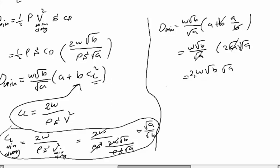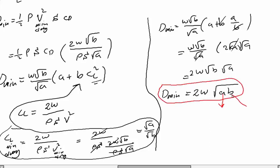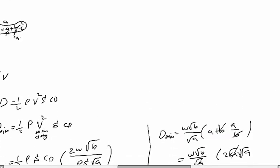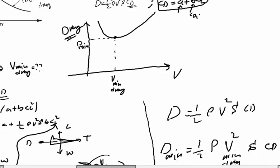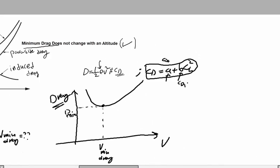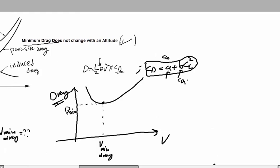The final result is: D_min = 2W√(a·b). Here 'a' is the parasite drag coefficient CD0, 'b' is the induced drag coefficient, and W is the weight of the aircraft — all constants. Crucially, there is no ρ (density) term in this equation. Since altitude is a function of density, minimum drag is not a function of altitude. This confirms that the original statement is true.